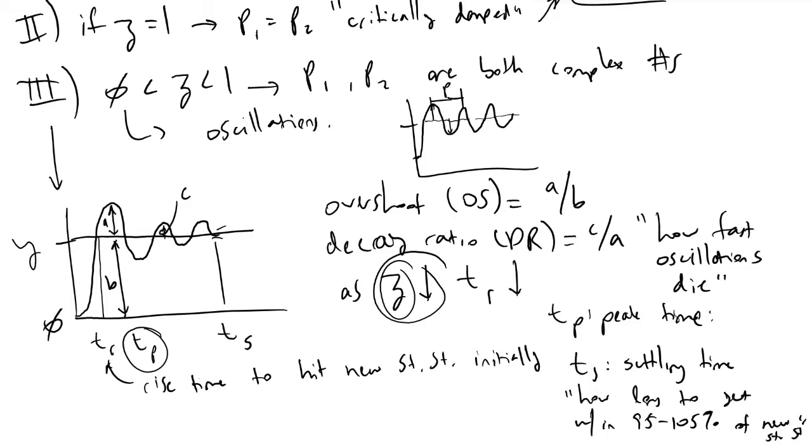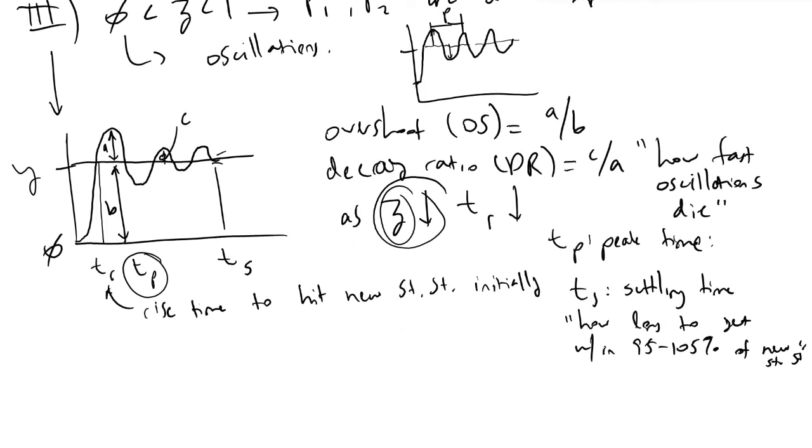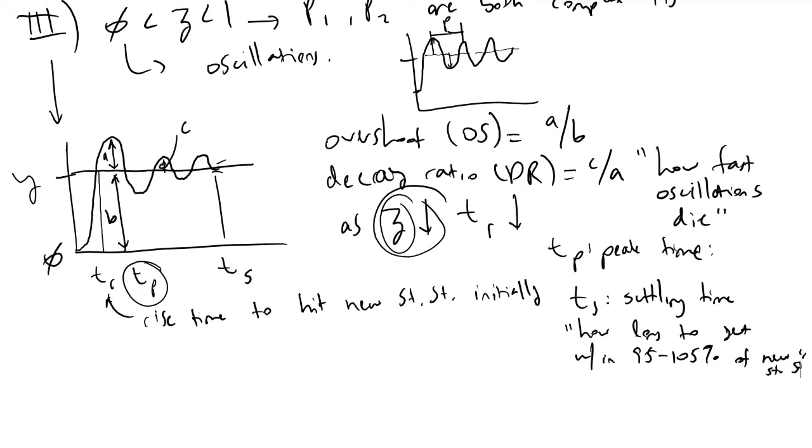These terms tp, ts, and tr allow us to, from a graph, be able to define other variables such as the overshoot and the decay ratio. Another important note to make with these second-order transfer functions is that the initial slope of second-order systems and anything greater than one is zero.